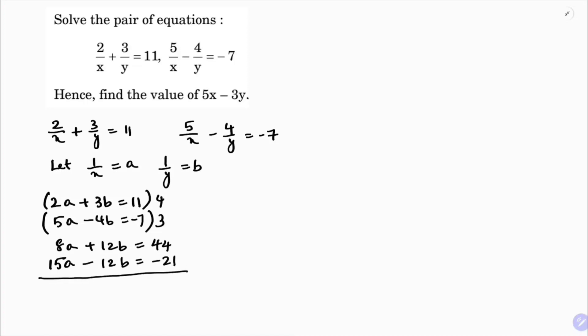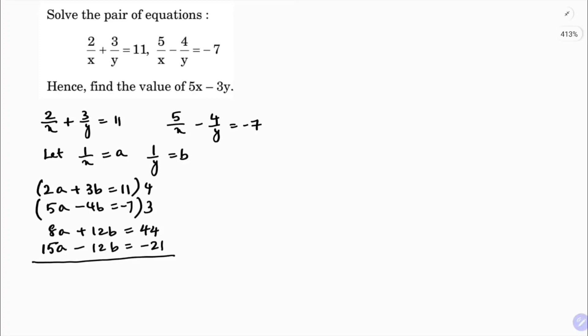I will add these both equations because the coefficients of b are positive and negative. 12b and -12b will cancel. 8 + 15 = 23a, and 44 - 21 = 23. So a = 23/23 = 1.